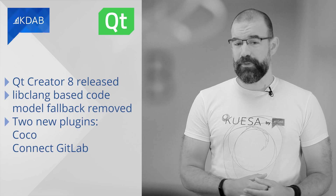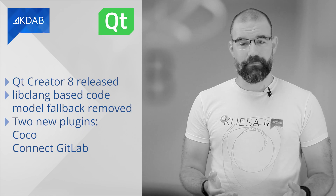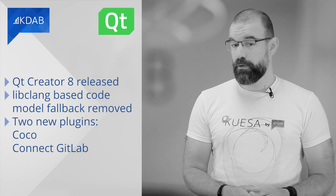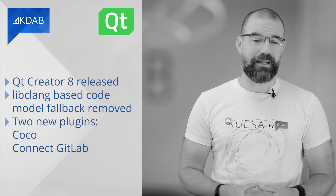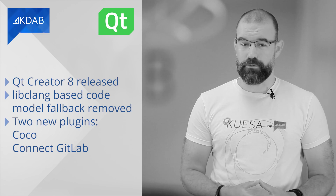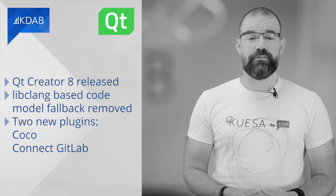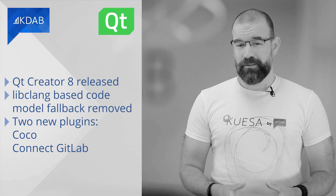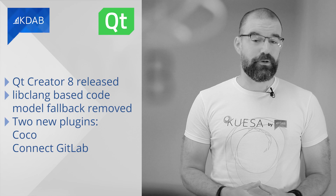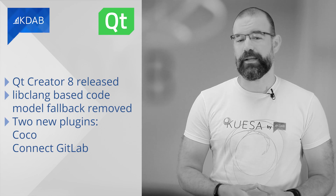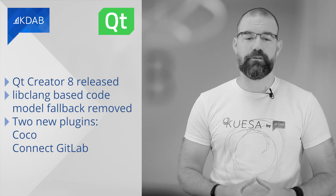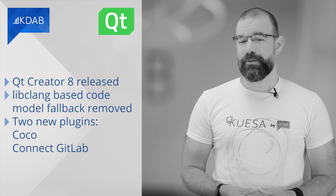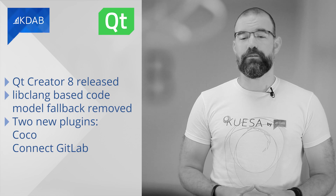Improvements have also been added for Python and CMake. Apart from that, two new plugins have been added. First, Coco — the code coverage analysis tool — allows you to show code coverage as annotations in Qt Creator's code editor. Second, you can now browse and clone projects and connect your checkouts with a GitLab instance to receive event notifications in the version control view. Check out the complete list of changes in the release notes linked below.